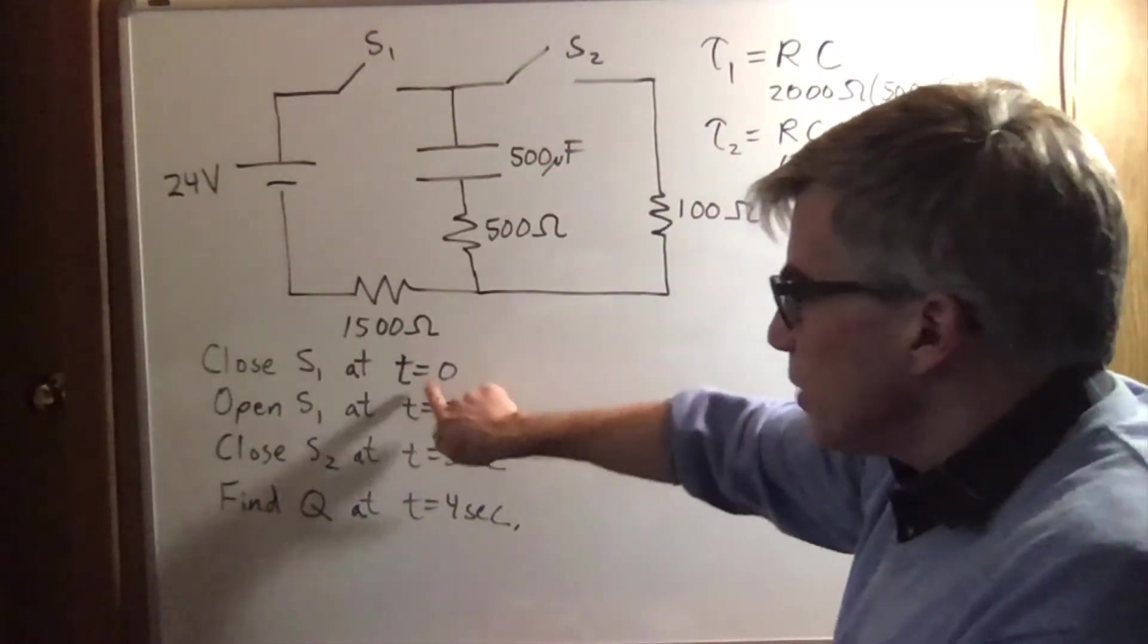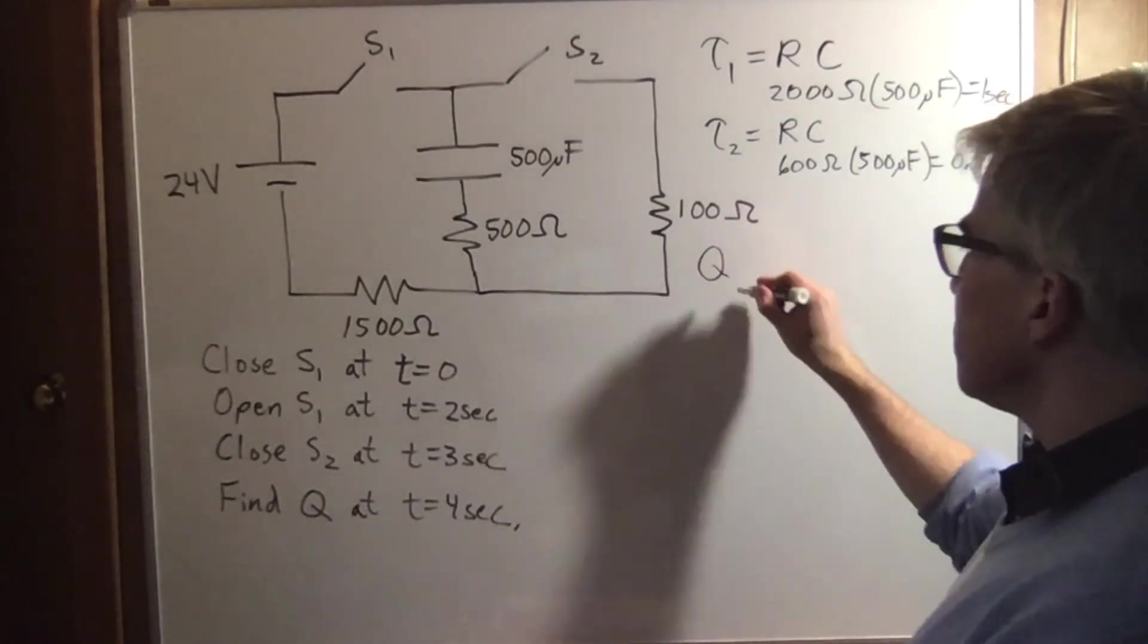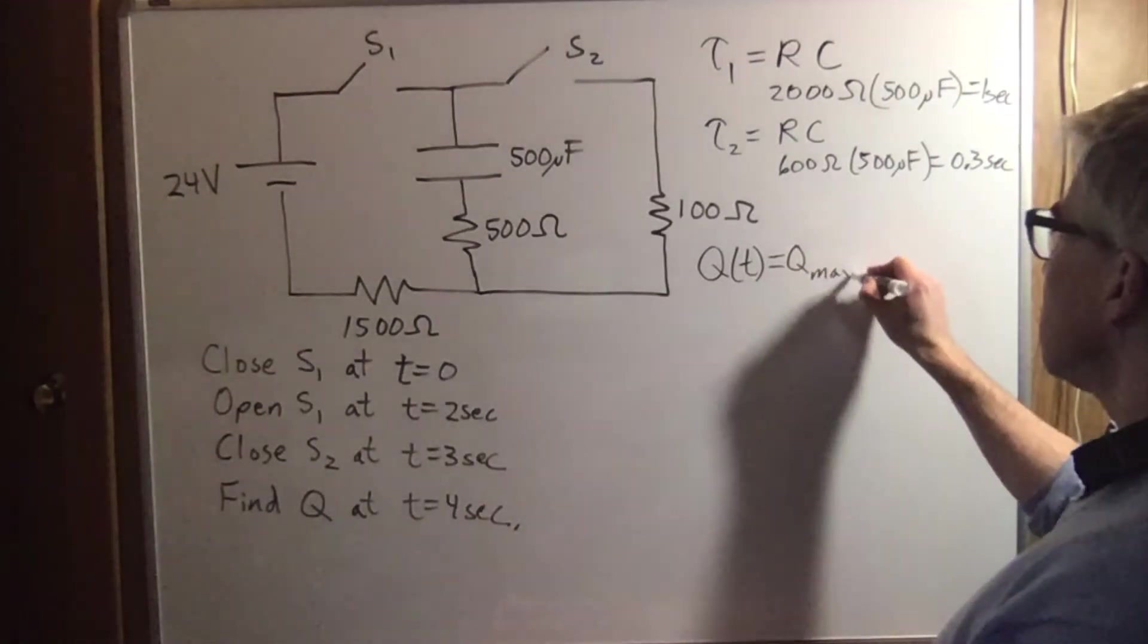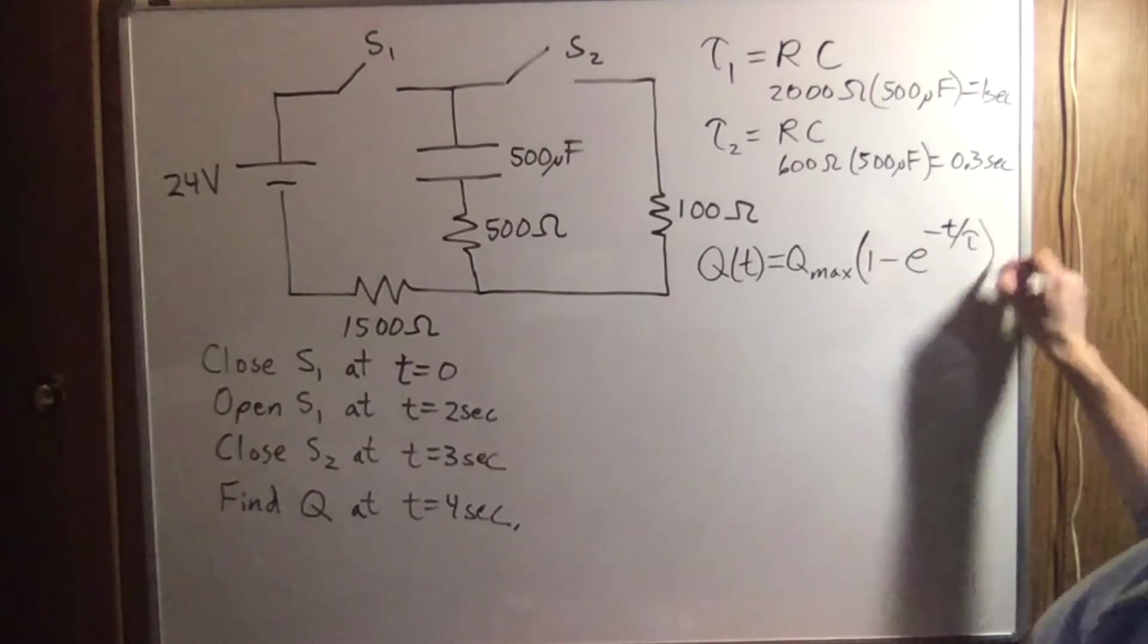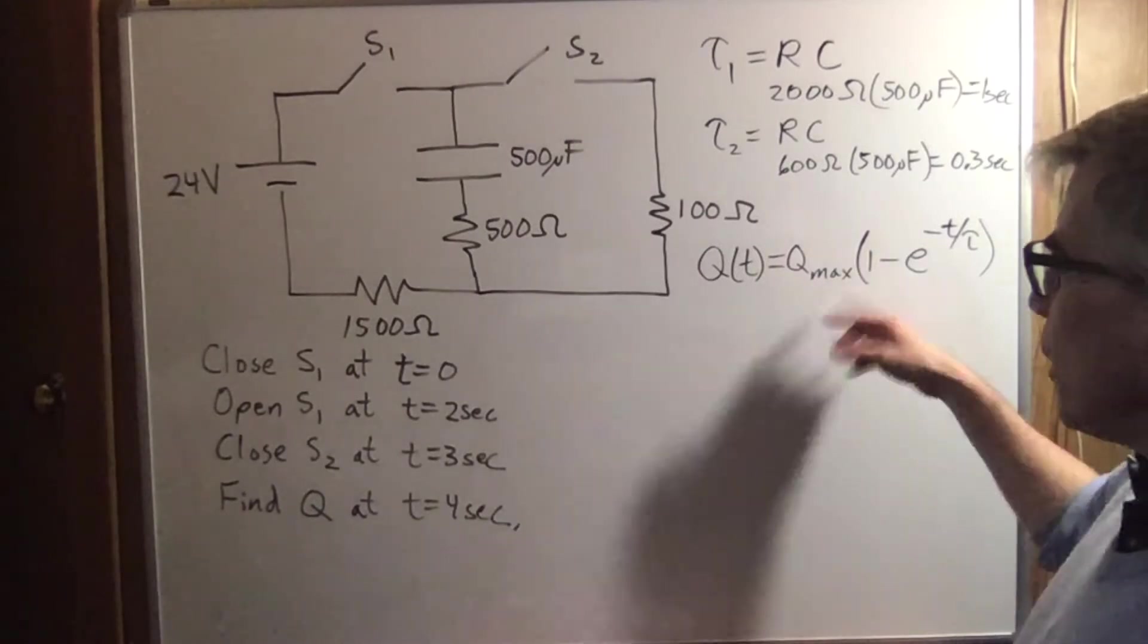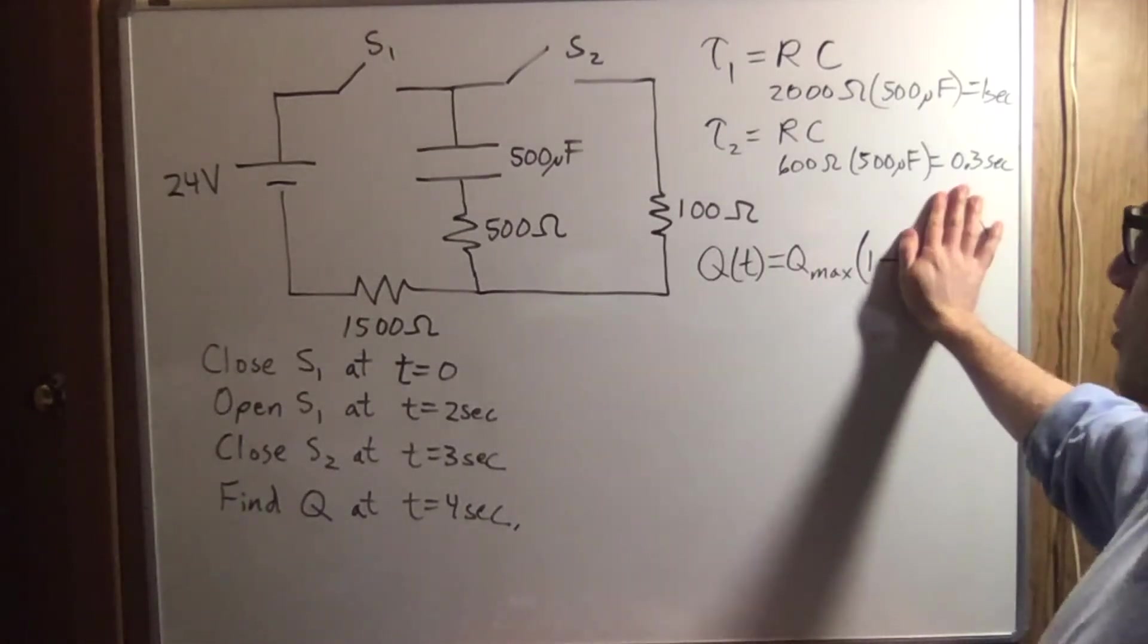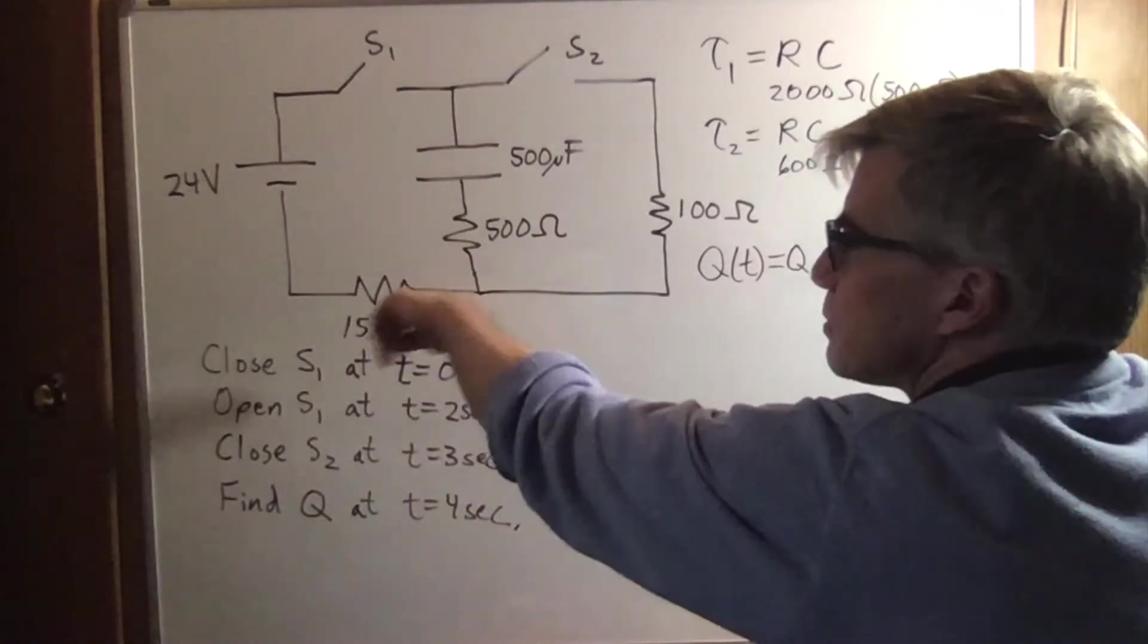Once we close the switch at time zero, how much charge is going to be on the capacitor? q as a function of t when we're charging up is going to be the q max times one minus e to the minus t over tau. First, what is q max? If we were to wait a really long time so that e to the minus infinity is zero, and we would end up with q max, that happens when the current stops flowing.